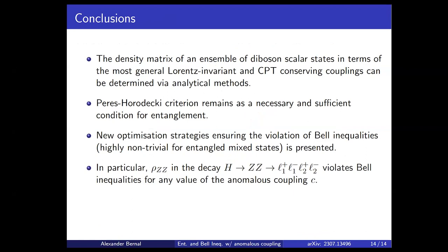In conclusion: the density matrix of an ensemble of scalar-to-vector-boson states, described by the most general Lorentz-invariant CP-conserving coupling, can be determined analytically. For these states, the Peres-Horodecki-like criterion remains a necessary and sufficient condition for entanglement. We have also provided a new optimization strategy that ensures Bell inequality violation — highly nontrivial for entangled mixed states. These results were applied to H→ZZ→four charged leptons with anomalous coupling, demonstrating that both entanglement and Bell violation are robust. Thank you.